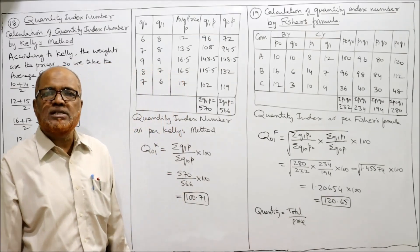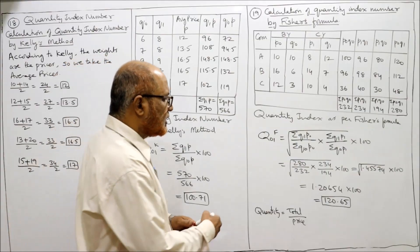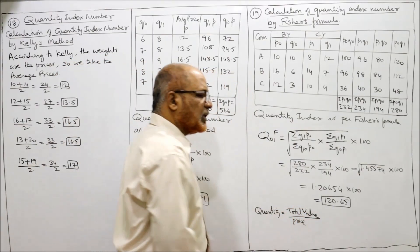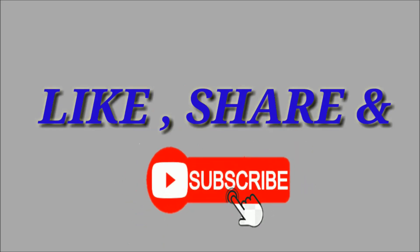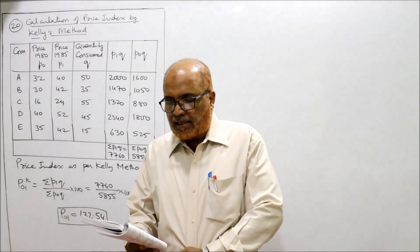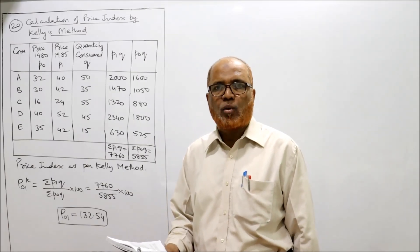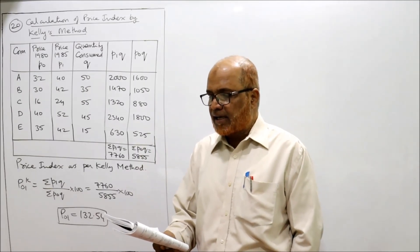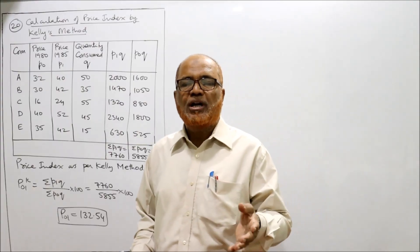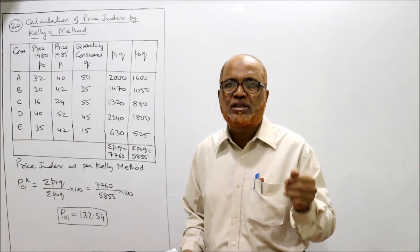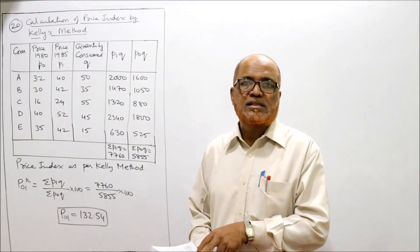The quantity index as per Fisher's formula is 120.65. Remember: quantity = total value divided by price. We have completed 19 problems. Now problem number 20: the following figures relate to prices and quantities of certain commodities, and we have to construct an index number using Kelly's method. When nothing is mentioned — whether price index or quantity index — we always assume it is price index, since price index is calculated most frequently. So here we calculate price index according to Kelly's method.